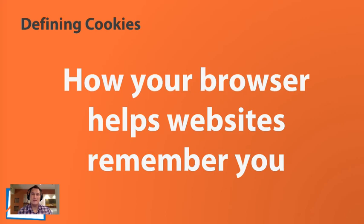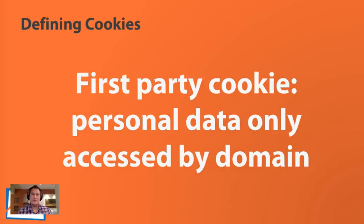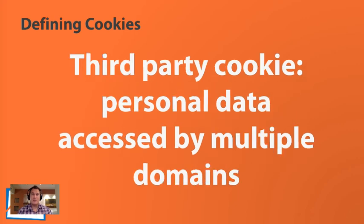There are two different types of cookies. One is called the first-party cookie — the cookie data is only accessible by the domain name that is setting the cookie. For example, analyticscourse.net — Google Analytics would access that through a first-party cookie, and that's how I can track if you come back to the website over and over again. First-party cookies are good because you're using that data just for yourself.